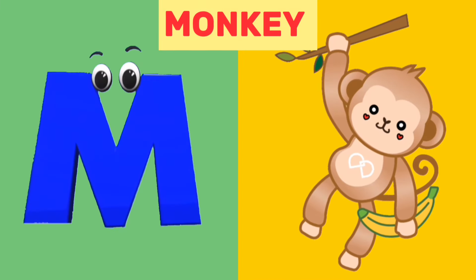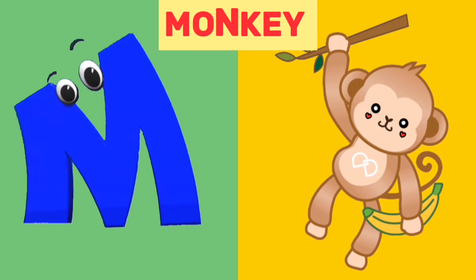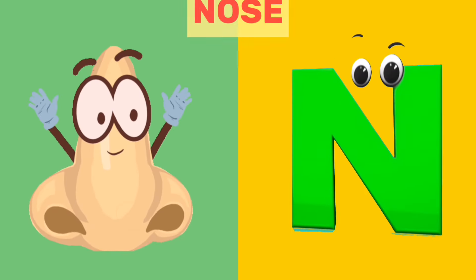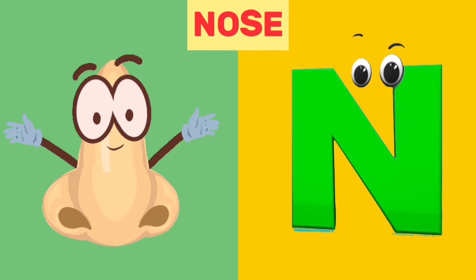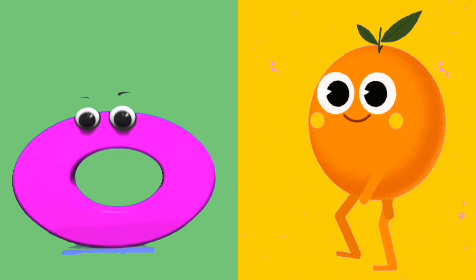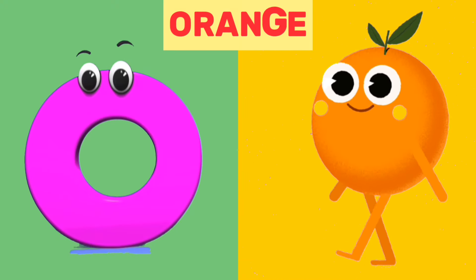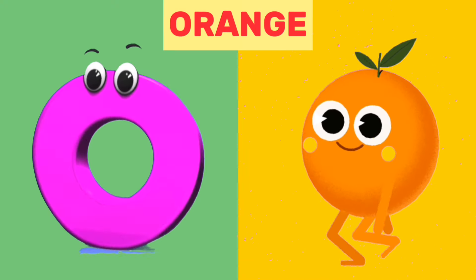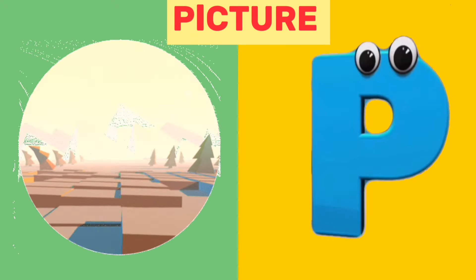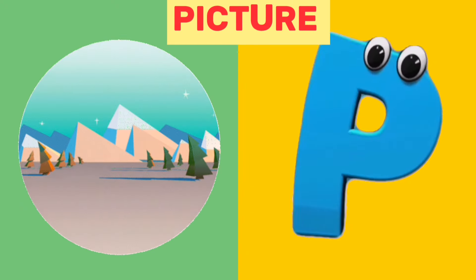M is for monkey. M, m, monkey. N is for nose. N, n, nose. O is for orange. O, o, orange. P is for picture. P, p, picture.